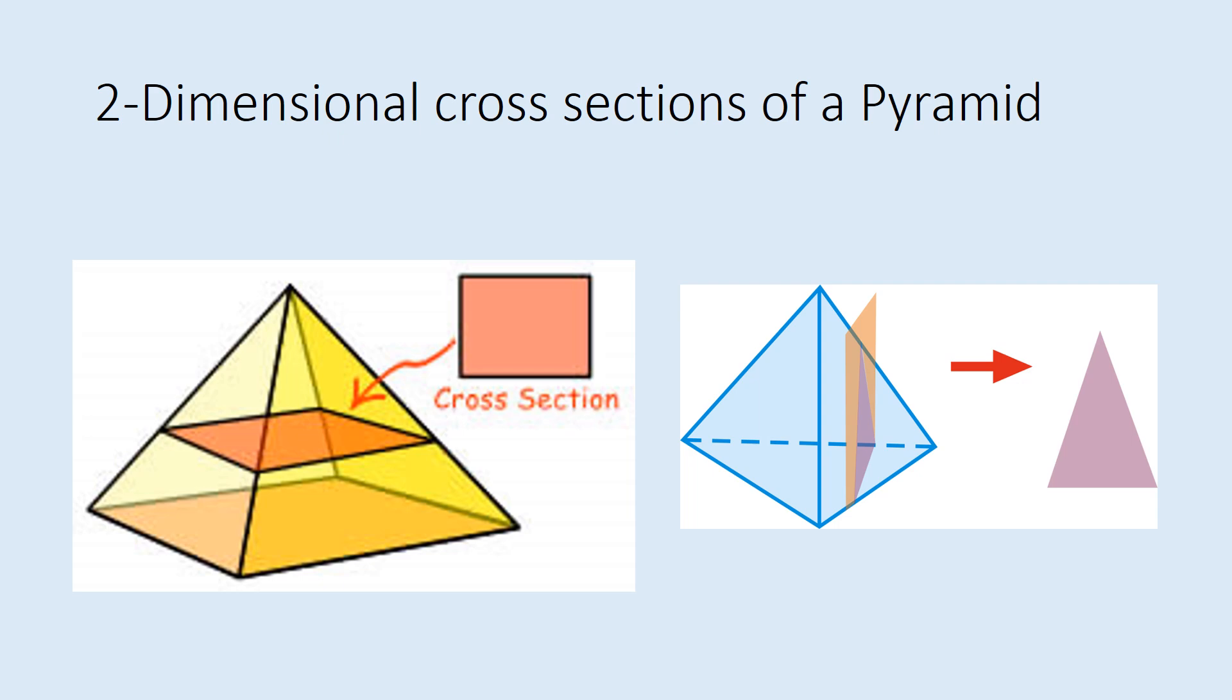Now if this prism had had a three-sided base when you sliced it you would get a triangle. If it had a five-sided base and you had sliced it horizontally you would have gotten a pentagon.